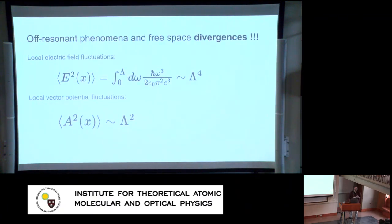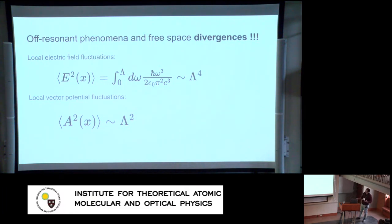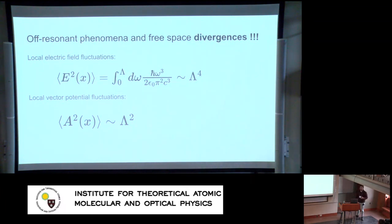Making matters worse, when you compute local electric field fluctuations in free space by summing over all modes, the answers diverge. For example, electric field fluctuations go as the cutoff to the fourth, and vector potential fluctuations go as the cutoff squared. So it is not even clear what strongly coupled single mode means, because no matter how strong it is, it's not going to be infinite.